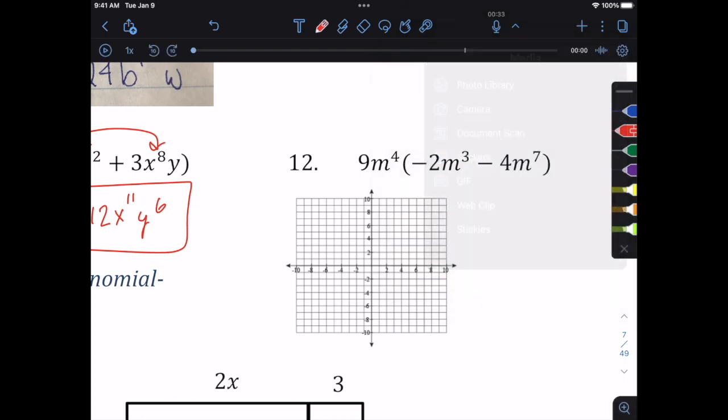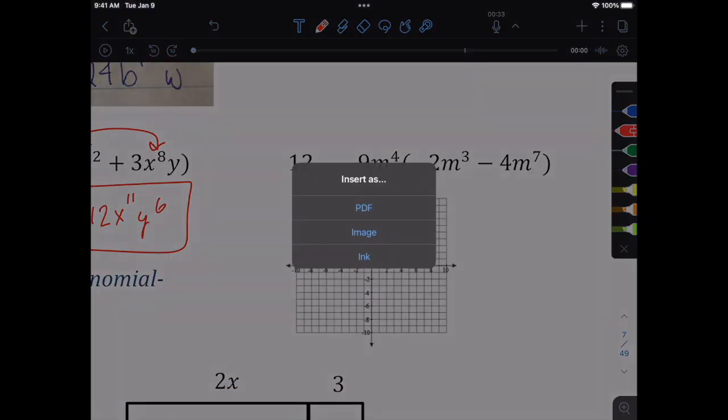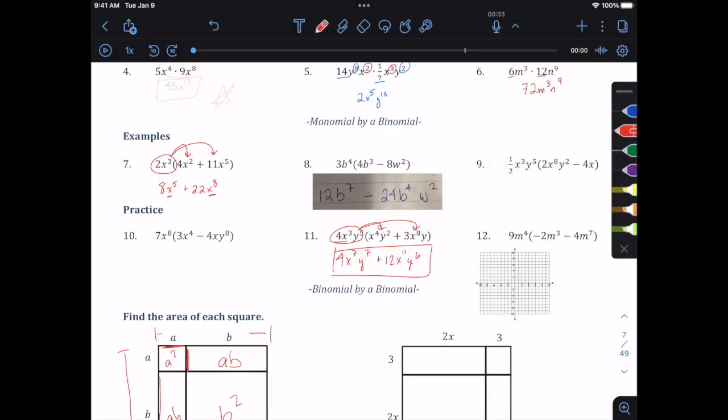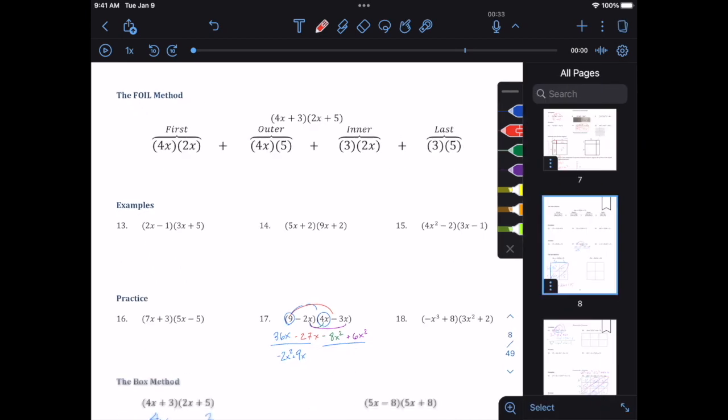You can even scan in an entire document. When you do that, if you hover above a document, it'll find the border of that. Once it finds the border, it'll take that. Now I can hit save. Should I insert this as a PDF, as an image, as ink? I'm going to insert it as a PDF here.